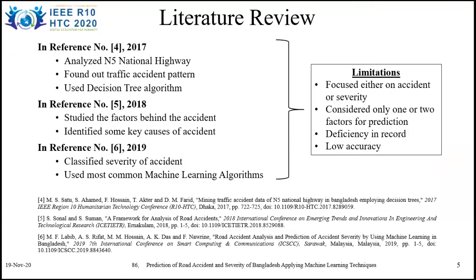Before starting our work, we studied some related papers which were helpful for us, focusing on recent publications. In reference 4, the authors analyzed the N5 national highway and found traffic accidental patterns using a decision tree algorithm. In reference 5, the authors studied the factors behind accidents and identified some key causes. In reference 6, the authors classified accident severity using common machine learning methods. All previous work had limitations: they focused either on accident or severity, considered only one or two factors, had deficiencies in records, and gave low accuracy. Keeping these limitations in mind, we started to build a better model for predicting accident and severity.